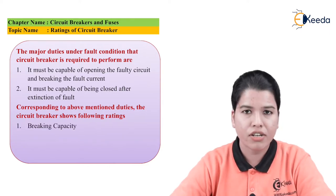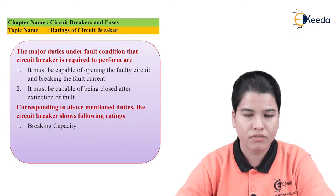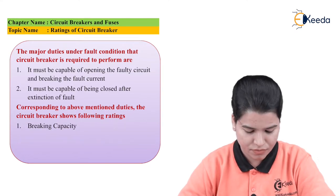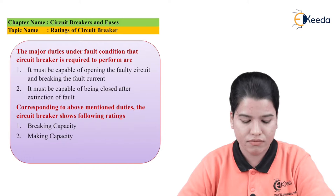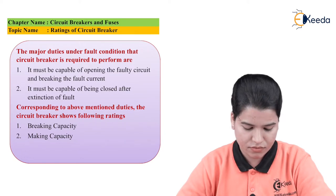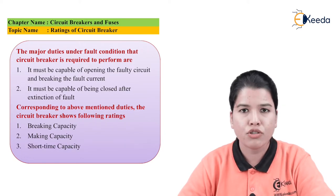The three main ratings of a circuit breaker are: first, breaking capacity; second, making capacity; and third, short time capacity.